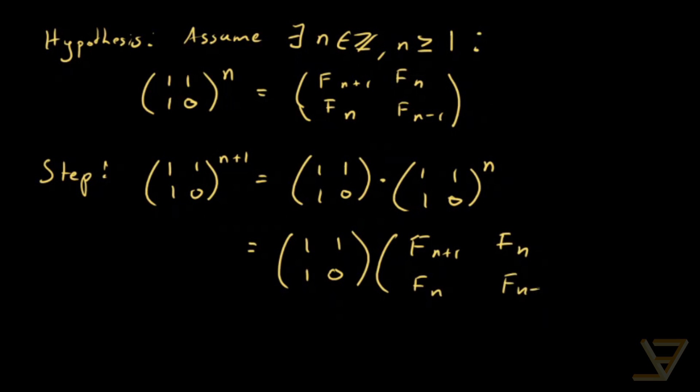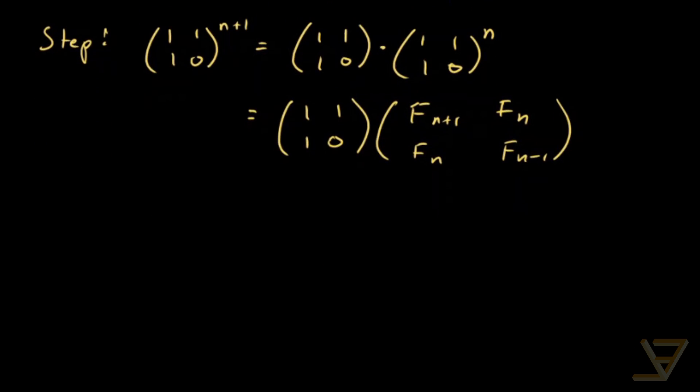And now we're going to use the definition of matrix multiplication to get that this equals [[Fn+1 + Fn, Fn + Fn-1], [Fn+1, Fn]].